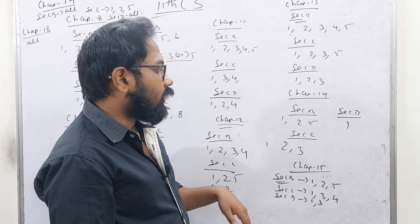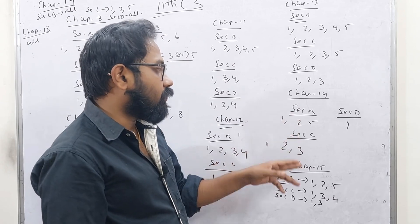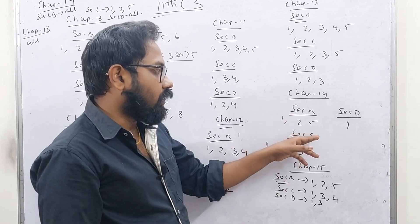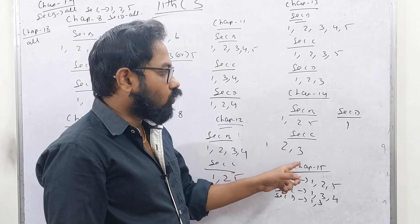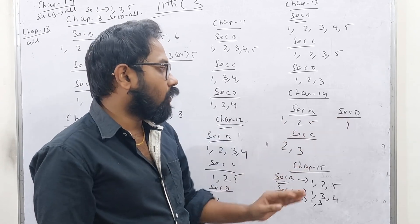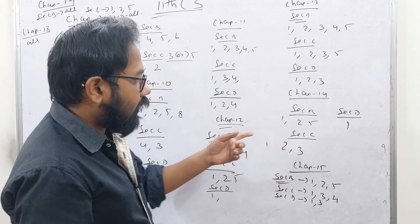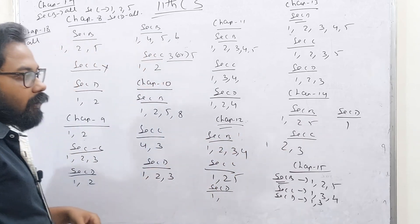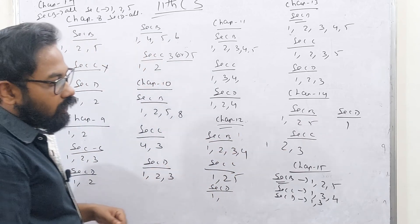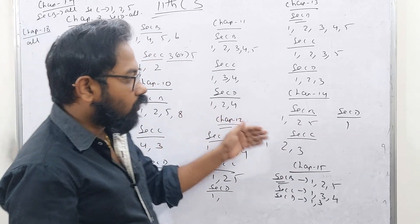Chapter 14: Section B is 1, 2, 5. Section C: 3-mark, 2, 3. Section D: 1. Chapter 14 is less — Chapter 14 is more.